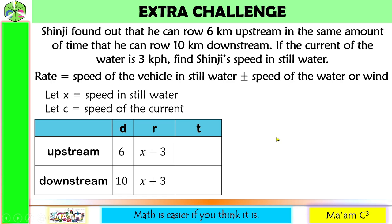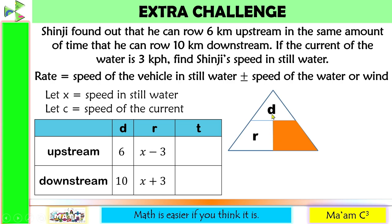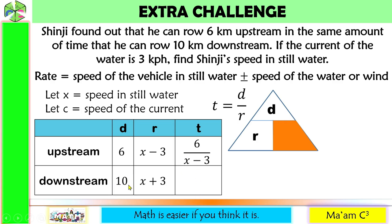For time, recall that t equals distance divided by rate. So upstream time is 6 divided by (x minus 3), and downstream time is 10 divided by (x plus 3). Since the problem states they take the same amount of time, we set these equal: 6 over (x minus 3) equals 10 over (x plus 3).